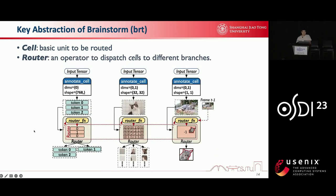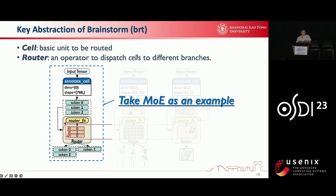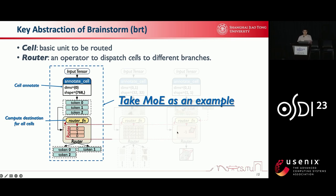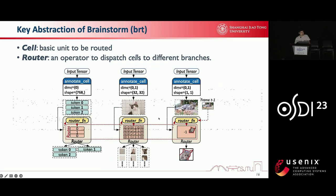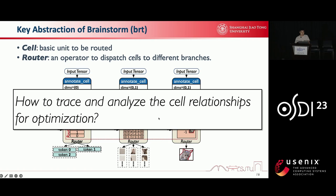Now I will show how we define the three previous dynamic models with the proposed abstractions. Take MOE as an example. In MOE, each token is a cell. Therefore, we first use the annotate API to specify the token as the cell. Then the router function computes destinations for all accepted cells. Assuming there are two experts, the route tensor specifies that the first and the third cells are routed to expert 0, and the second one is routed to expert 1. The router then dispatches them to different experts accordingly. There is still one question remaining: how to trace the runtime statistics, for example cell relationships, and analyze them for optimization.